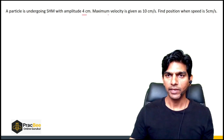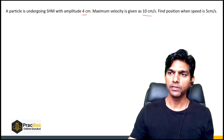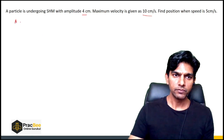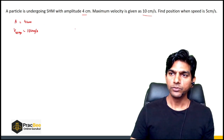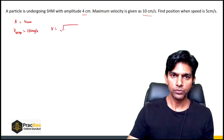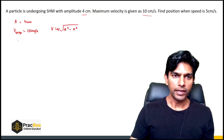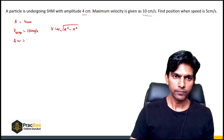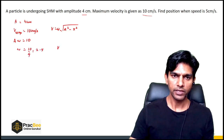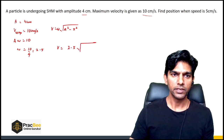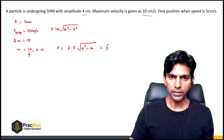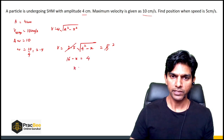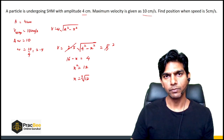The first question: a particle is undergoing simple harmonic motion with an amplitude of 4 cm and maximum velocity of 10 cm/s. Find the position when the speed is 5 cm/s. We use the formula v = ω√(A² - x²). We find ω = v_max / A = 10/4 = 2.5. Substituting v = 5, we get 16 - x² = 4, so x² = 12, giving x = ±√12.